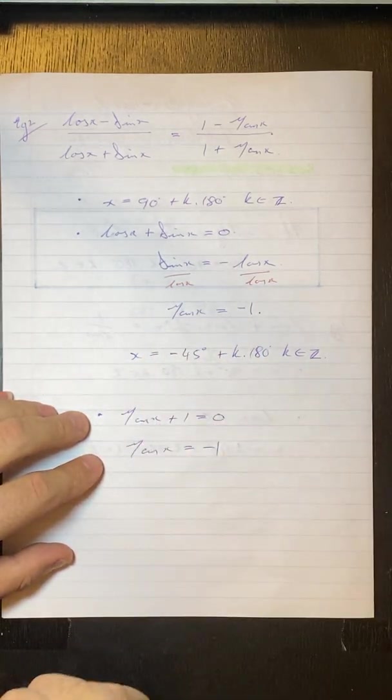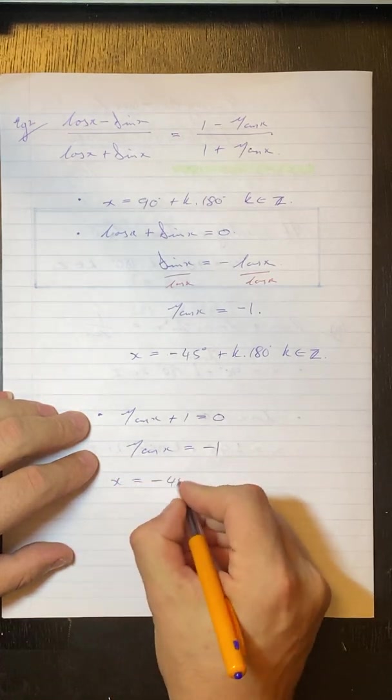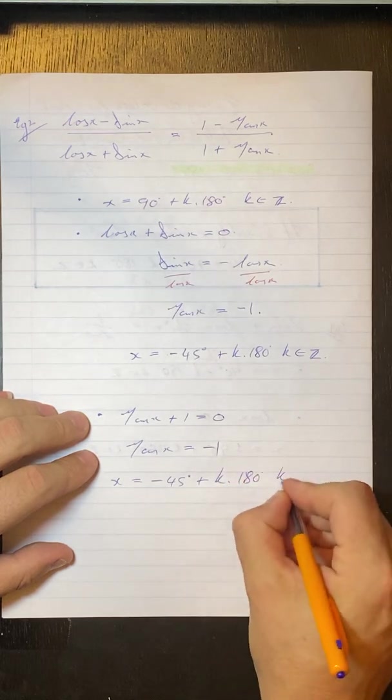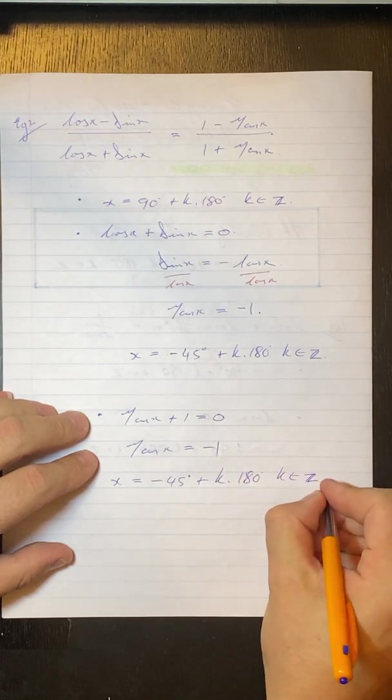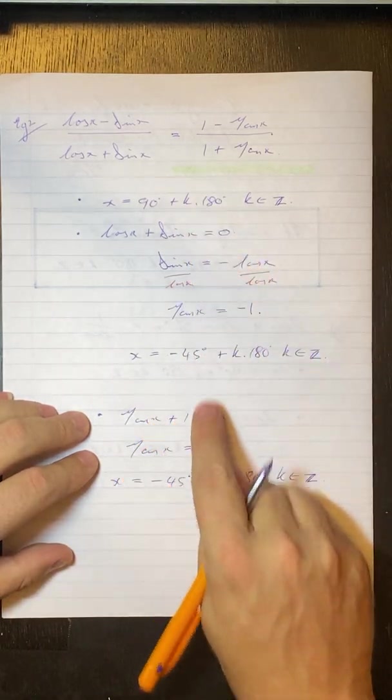To solve for this we get tan x is equal to minus 1, which is exactly the same as this, but I'm just going to write out the solution again. x is equal to minus 45 plus k 180 where k is an element of the integers. And there our solutions are: we have that one, that one and that one.